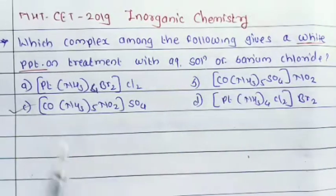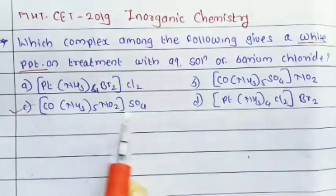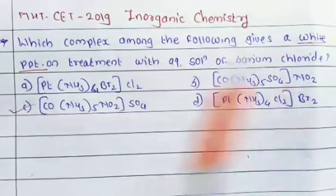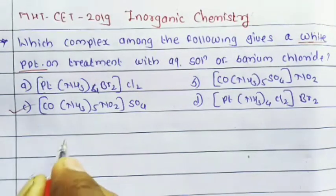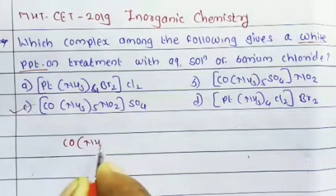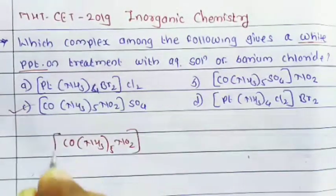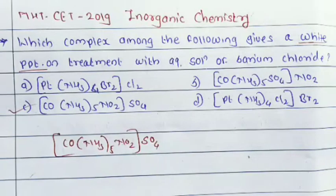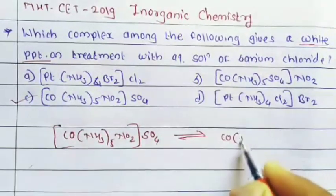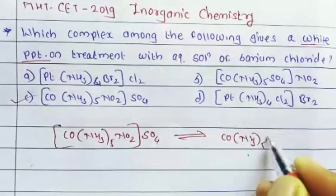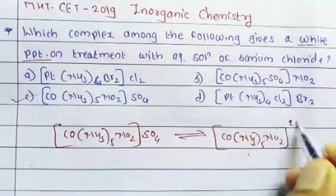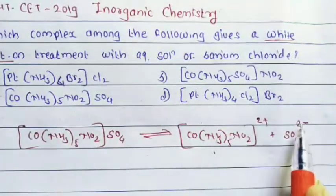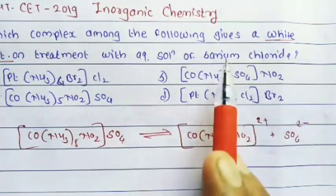Option C, [Co(NH₃)₅NO₂]SO₄, gives a white precipitate on treatment with barium chloride. This complex of cobalt breaks apart to give [Co(NH₃)₅NO₂]²⁺ plus SO₄²⁻ ions.